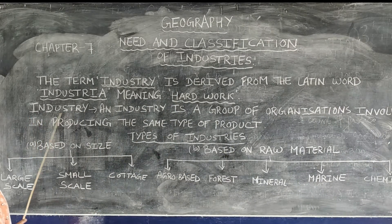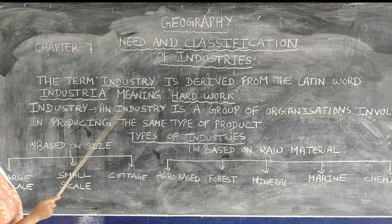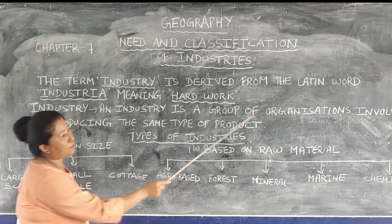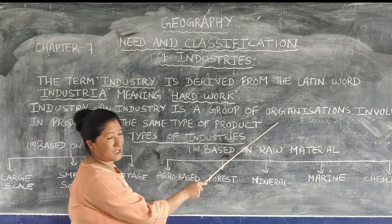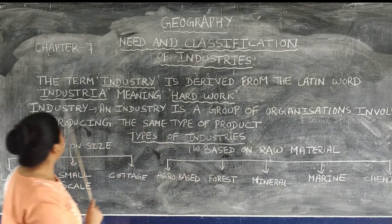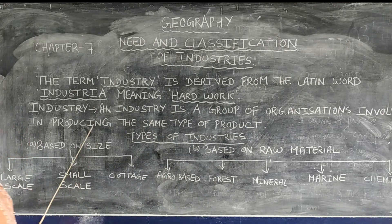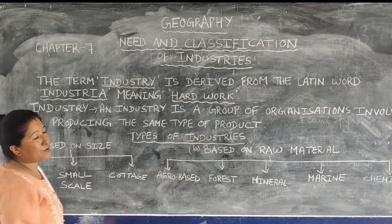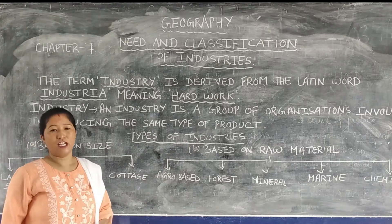Now what do you mean by industry? An industry is a group of organizations involved in producing, manufacturing, or handling the same type of product.